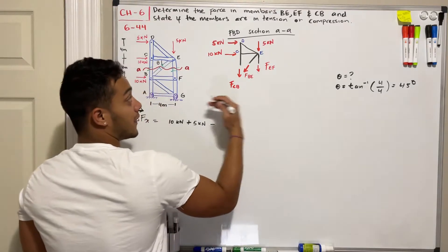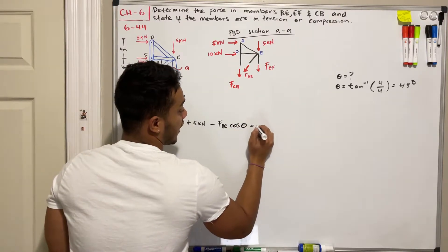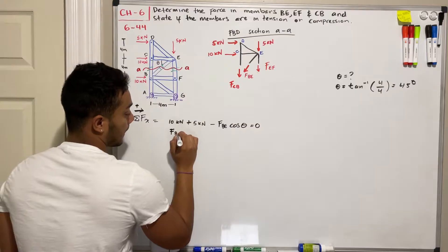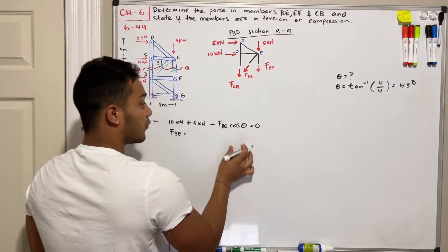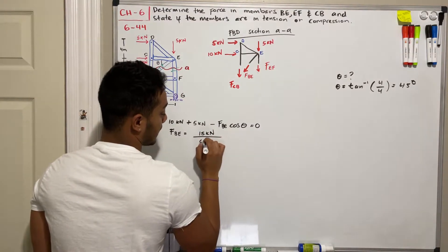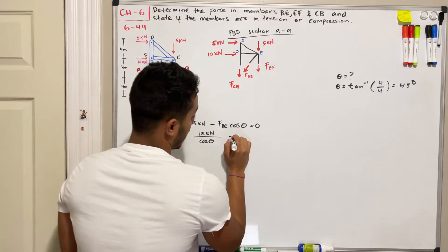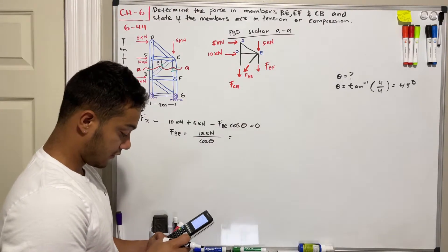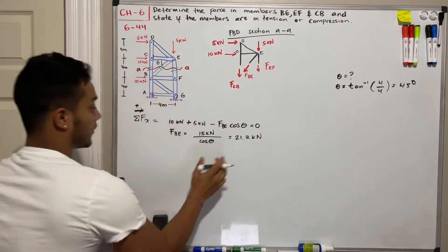Solving the x-direction equation: 10 + 5 − FBE·cos(θ) = 0. Passing FBE to the other side, we get FBE = 15 / cos(45°) = 21.2 kN. That's our first unknown solved.